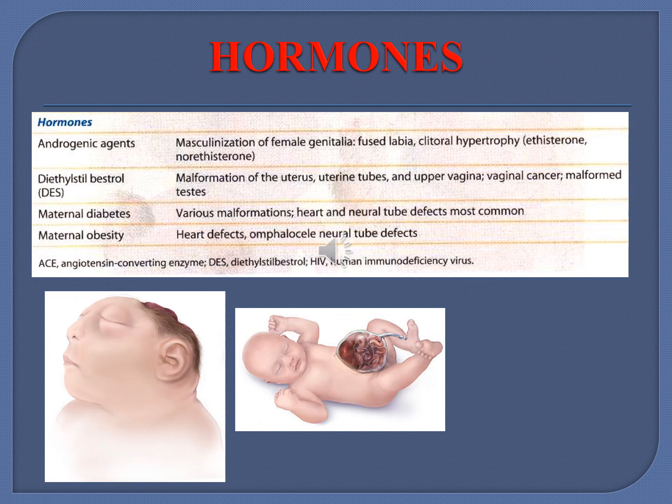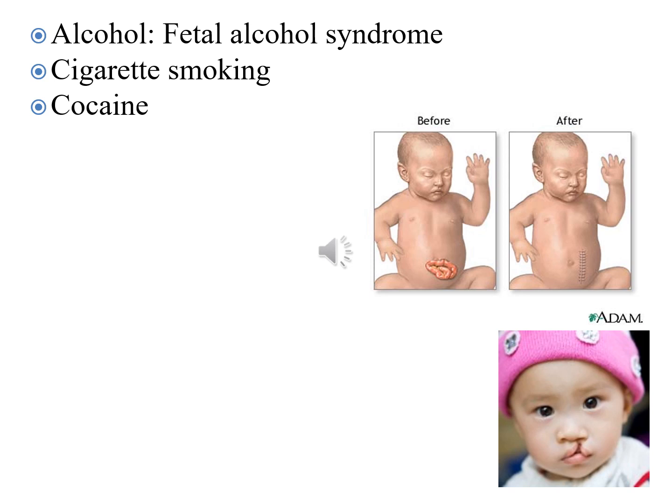Certain hormones are also capable of causing congenital abnormalities. Androgenic agents can cause masculinization of the female genitalia. Diethylstilbestrol can cause uterine malformations. Maternal diabetes is known to cause neural tube defects, and maternal obesity is also known to cause neural tube defects. A pregnant lady should avoid consuming alcohol, cigarette smoking, and drugs, as these are known teratogens that can lead to conditions such as cleft lip and cleft palate.